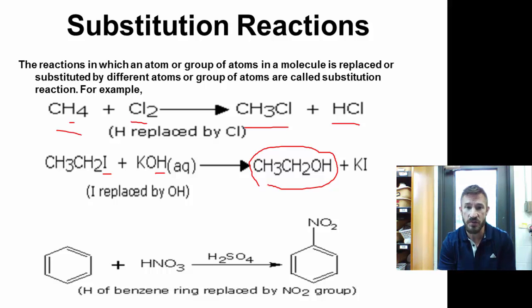And then also, you could have things replaced on a benzene ring, and here we have NO2. Now, this one's a little bit more complicated because it has nitric acid, but most of the substitutions we're going to do in the benzene ring are when we replace a hydrogen with a chlorine. That'll be a little bit more simplistic.